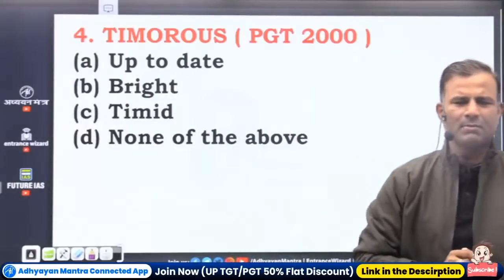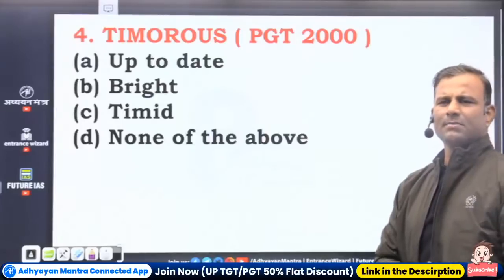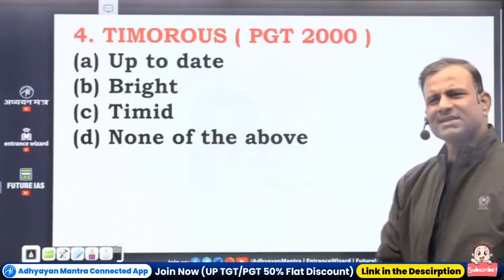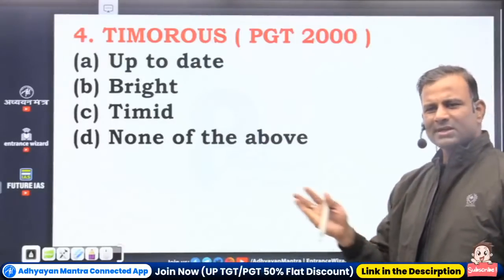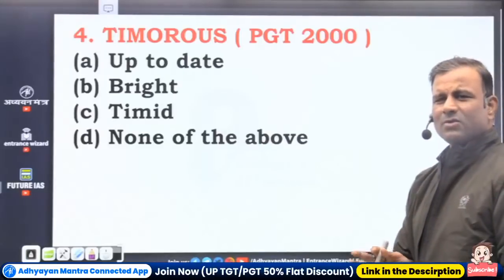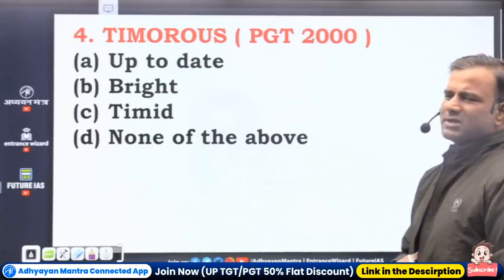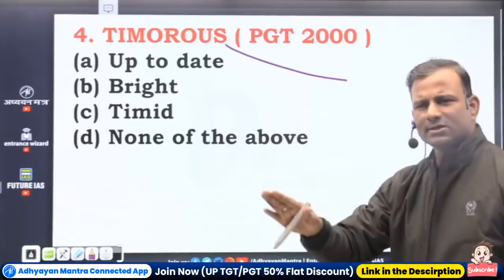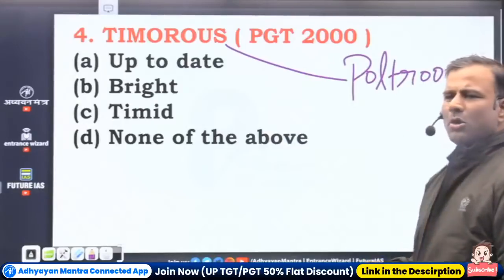Timorous — who is timorous? The one who is very fearful. Synonyms: poltroon, timid, pusillanimous — 'this is a dastard act' means a cowardly act. Meek and submissive can also be used, though they lean more towards being pliant or complacent. Pusillanimous is a very good word. In Hindi, timorous means bhiru or darpok.